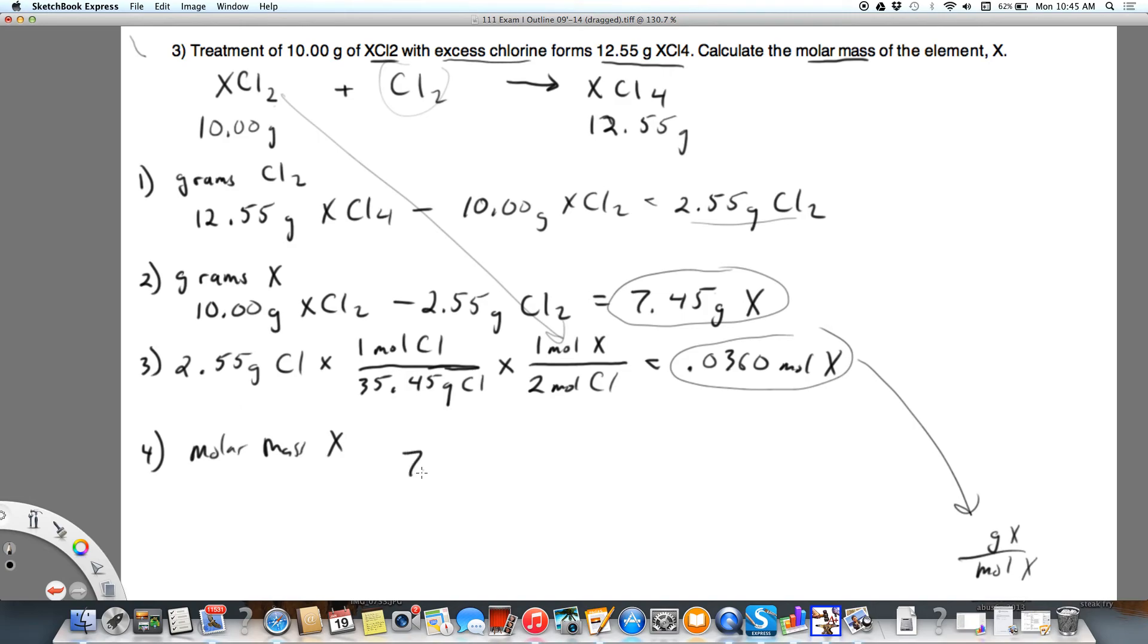So I'm going to take 7.45 grams of X. And I'm going to divide that by 0.0360 moles of X. And that's going to equal 207 with the three sig figs grams X per mole X.